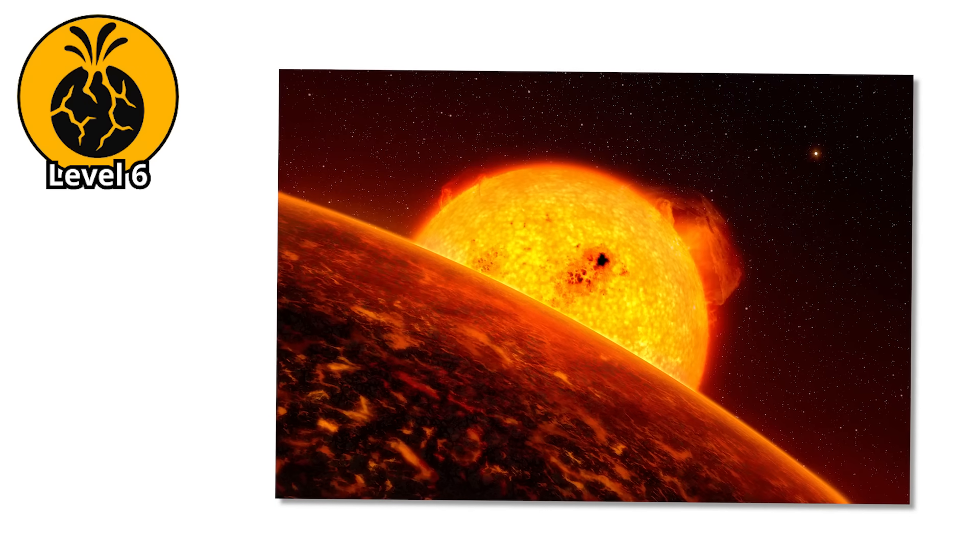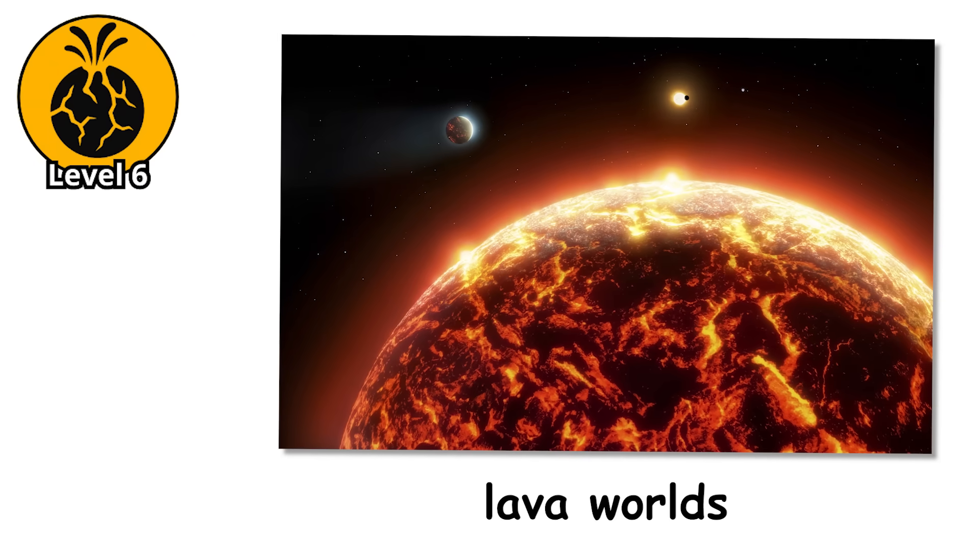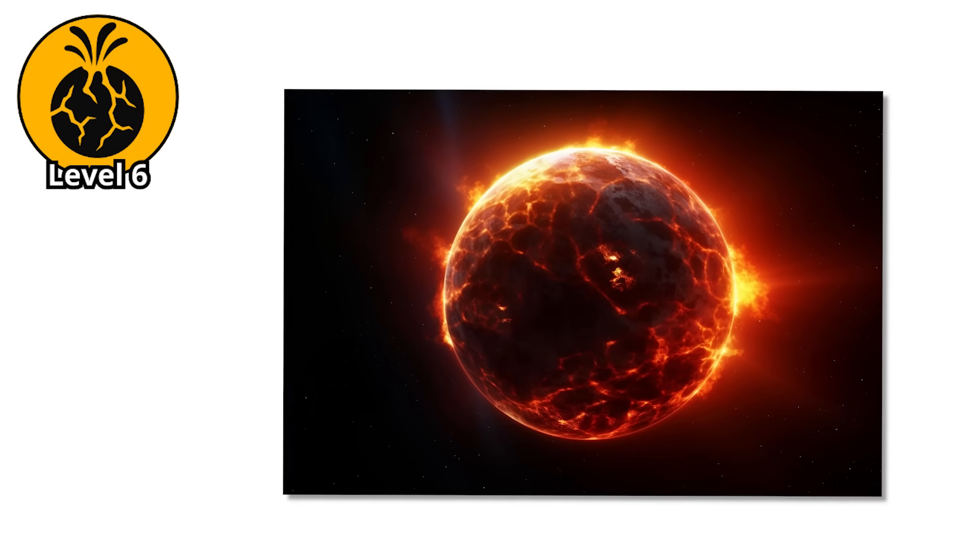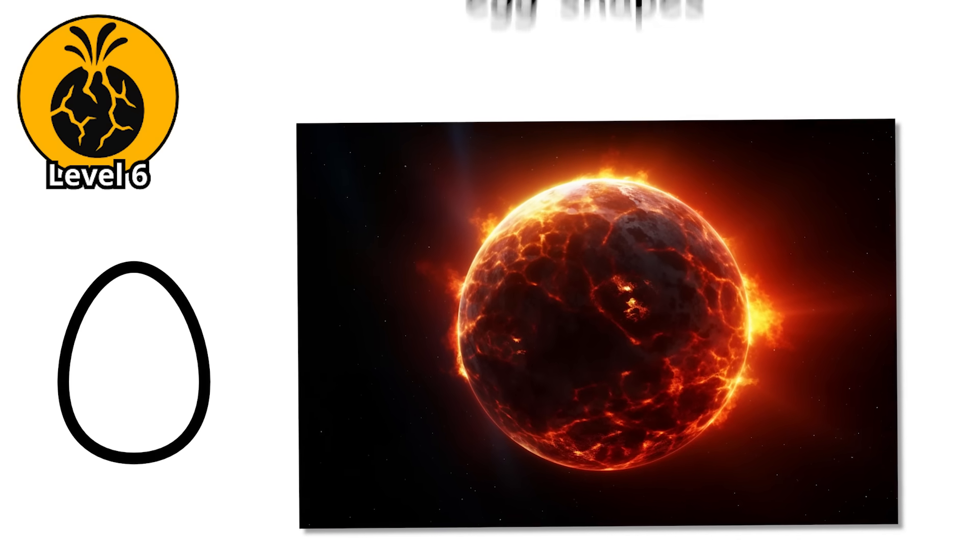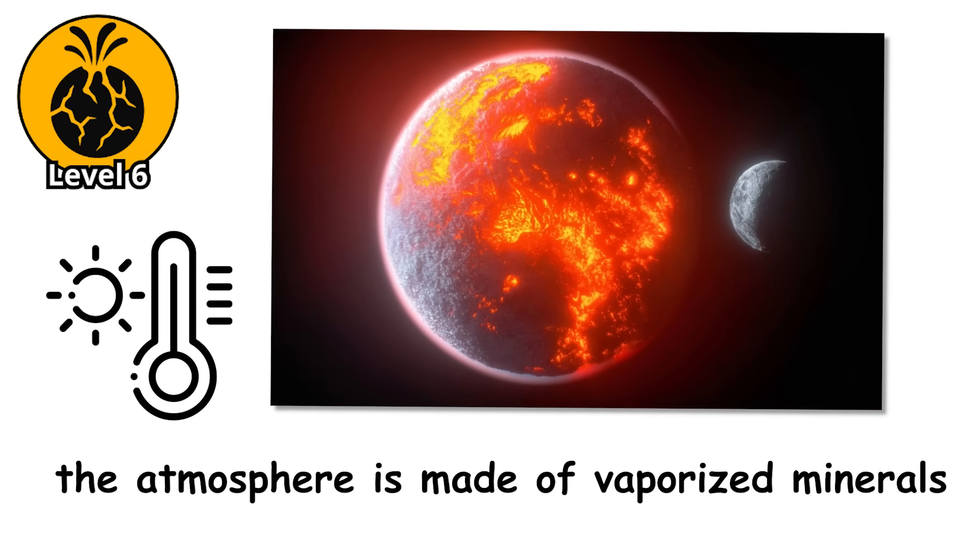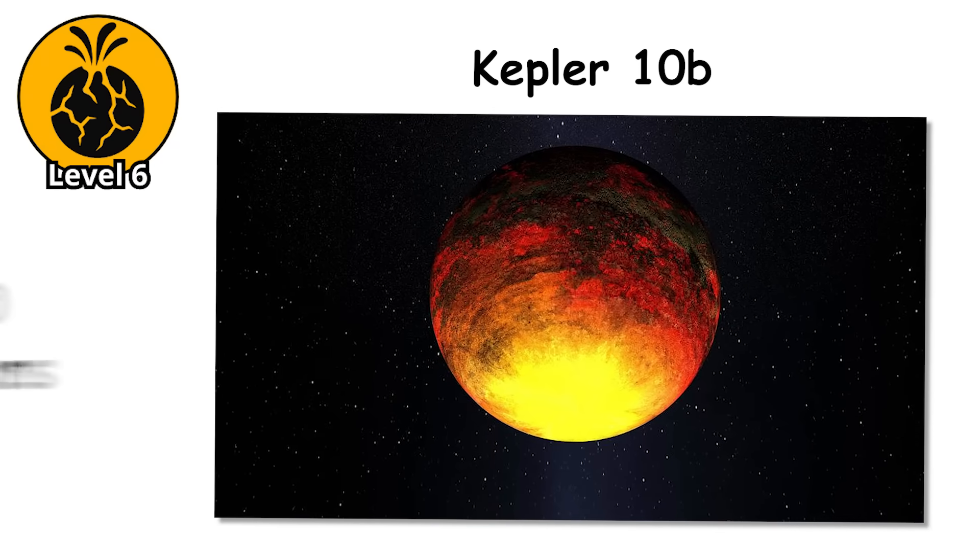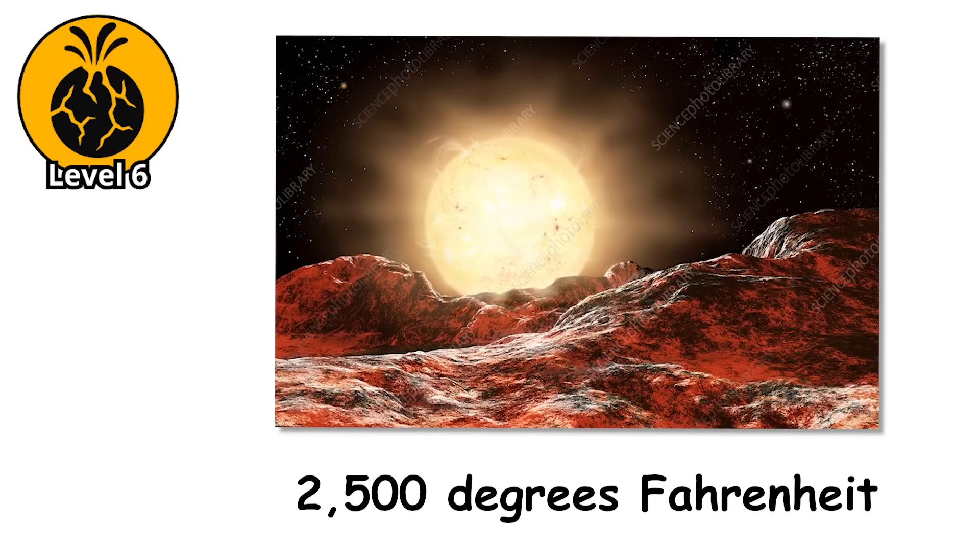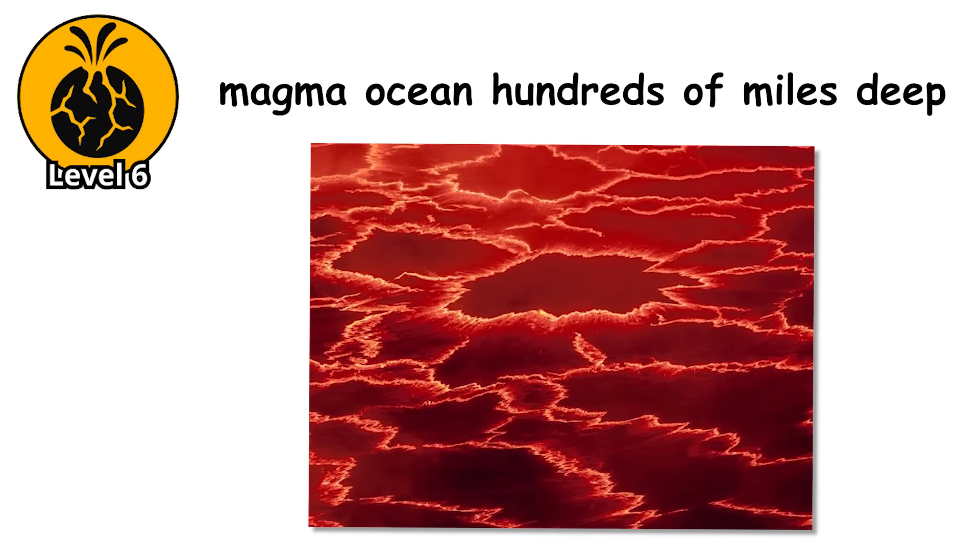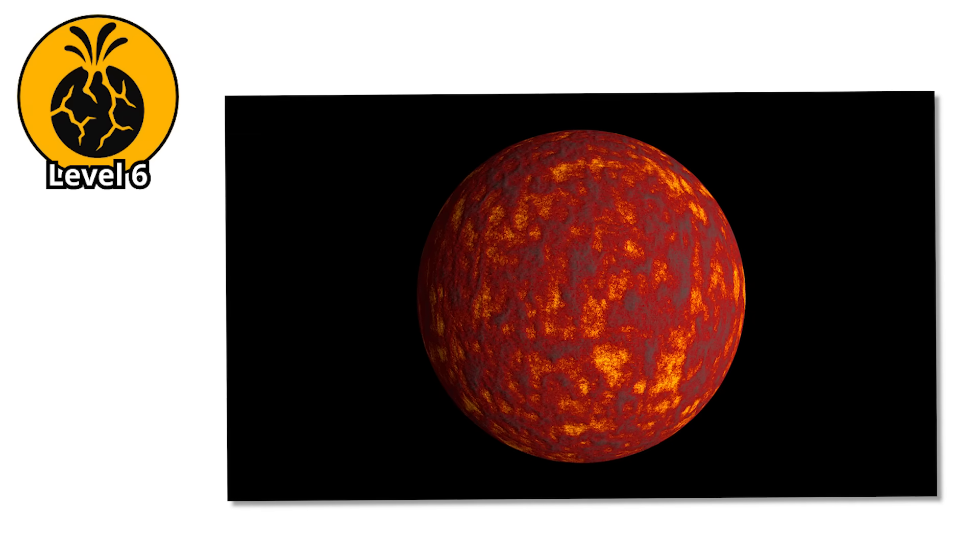Level 6. Imagine a planet so close to its star that its entire surface is an ocean of molten rock. These lava worlds orbit their stars in a matter of hours, sometimes less than a day, locked in such a tight gravitational embrace that tidal forces have stretched them into egg shapes. The dayside faces permanent nuclear hell, heated to temperatures where rock flows like water and the atmosphere is made of vaporized minerals. Kepler-10b completes an orbit around its star in just 20 hours. Its surface temperature is estimated at 2500 degrees Fahrenheit, hot enough to melt iron. The entire planet might have a magma ocean hundreds of miles deep, constantly churning, with a thin crust that cracks and reforms like the skin on cooling lava.